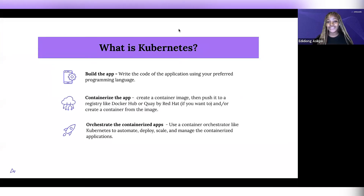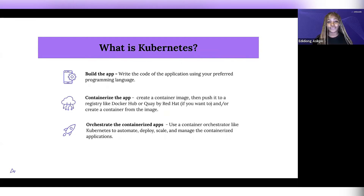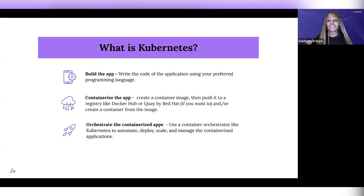I believe it would be more beneficial if I explain the meaning of Kubernetes using this flow rather than just defining Kubernetes. On a high level, building cloud-native applications follows this format: you have to build the application using your preferred programming language — it could be anything, Java, JavaScript, whatever. After you've done that, the next step would be to create a container image. You're probably wondering, what is a container image? A container image basically carries every single piece of information needed to create a working container.